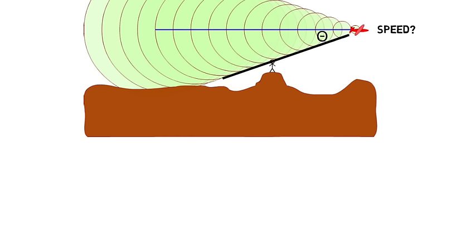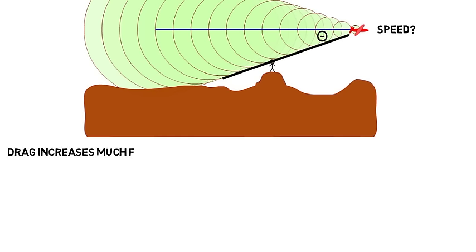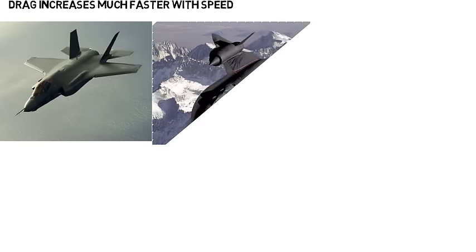Now at supersonic speeds, the drag on the aircraft also increases much faster as the aircraft speeds up. To compensate for all this, supersonic aircrafts are made to be more narrow and have a sleeker look to them.